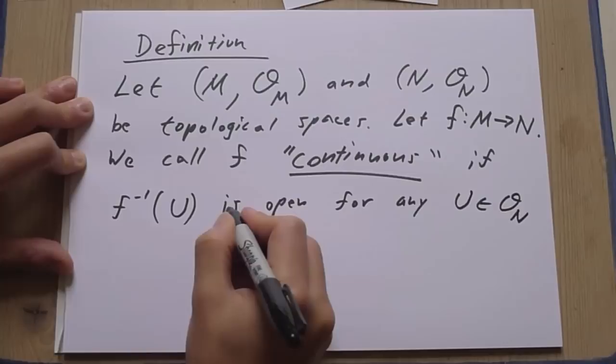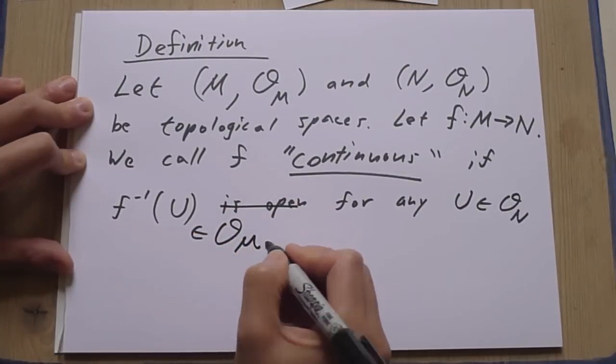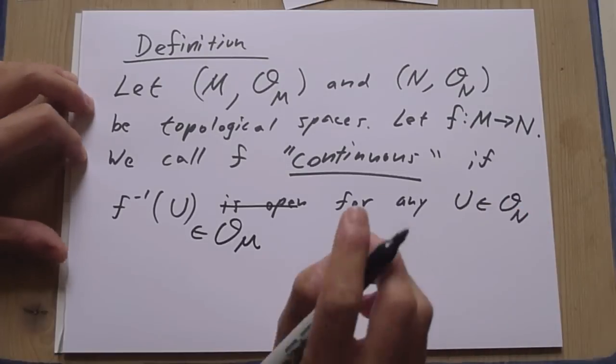Let F map M to N. We call F continuous if F inverse U is open for any U which is open in N. In other words, F inverse U is in O-M for any U in O-N.